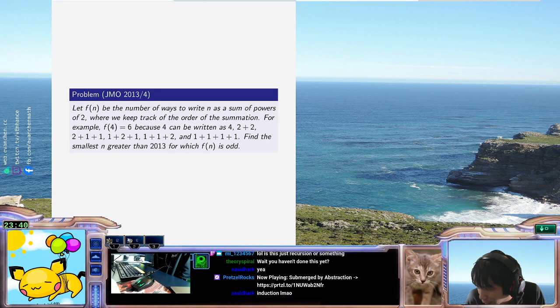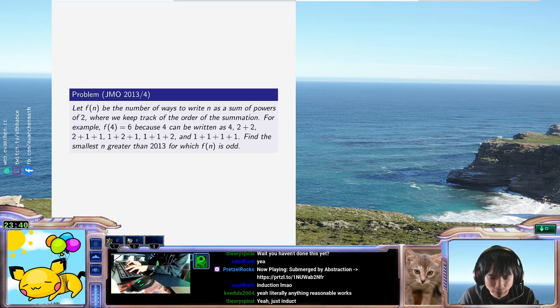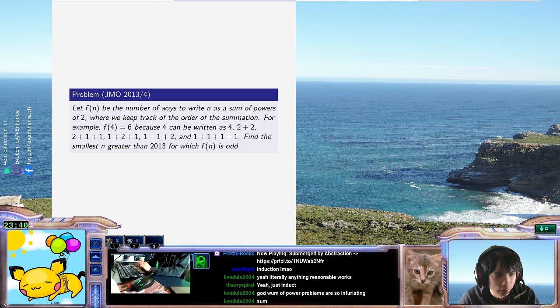F of n is, so you pick the first number and then it's the things after it, right? F of n is the sum from k equals 1 to 4 log 2 of n of F of n minus 2 to the k, plus 1 if n is actually a power of 2.